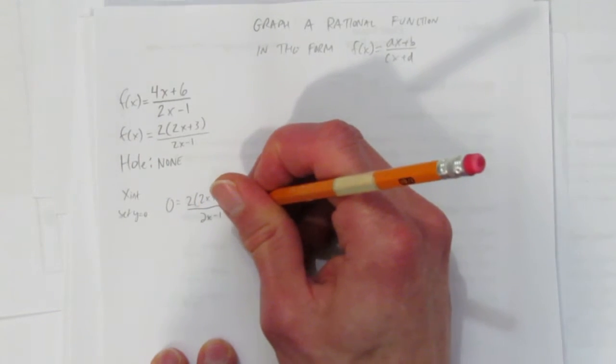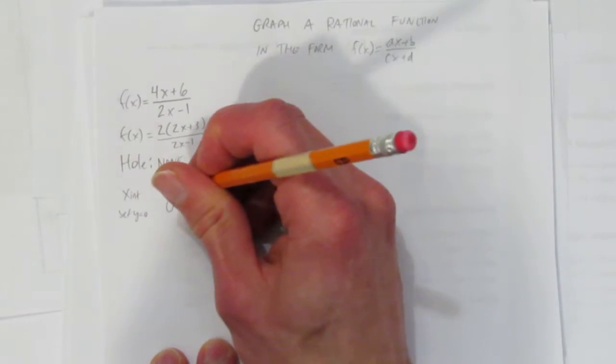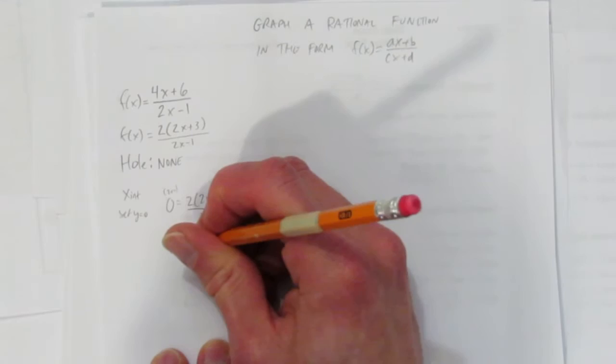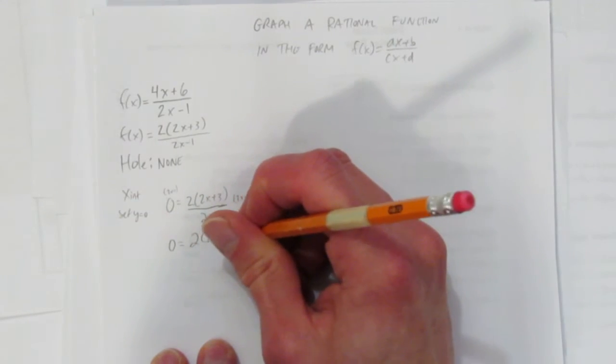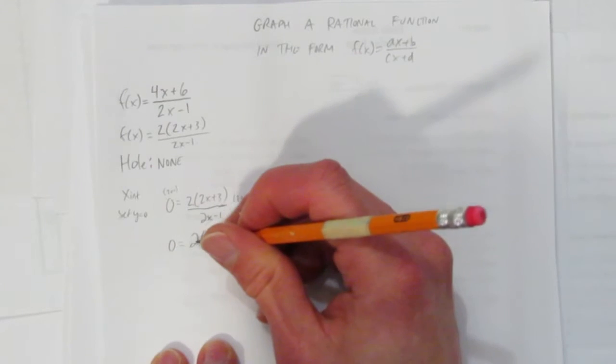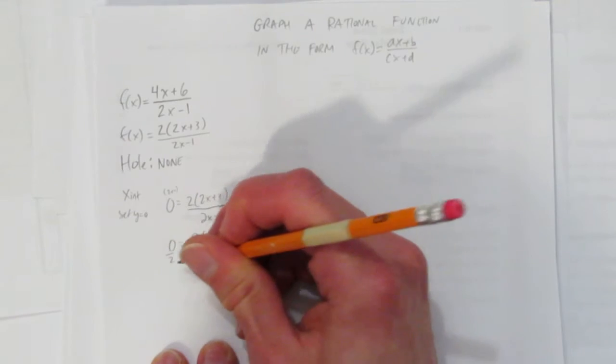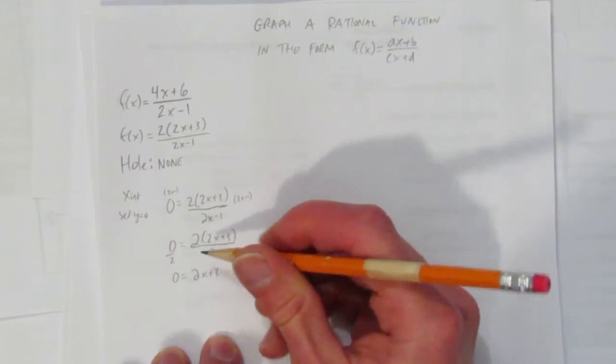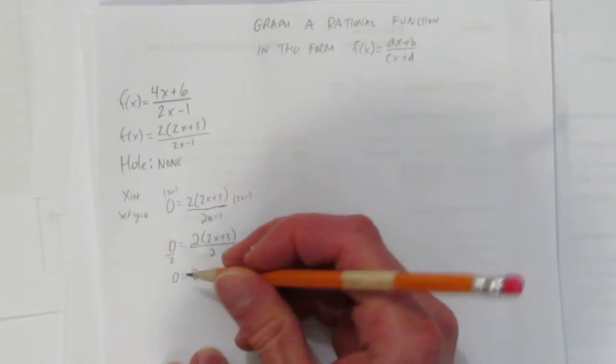Now notice, you could multiply both sides by 2x-1 and you would get rid of this denominator. You'd still have 0 on the left side. These would cancel. And you have 2(2x+3). You could even divide both sides by 2. And now you've just got 0=2x+3. To find the x-intercept, set y=0 and start to solve with easy moves.